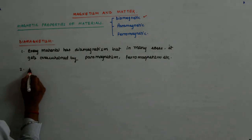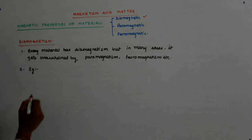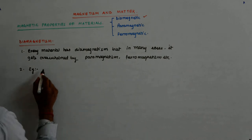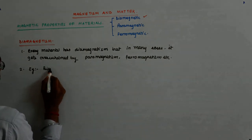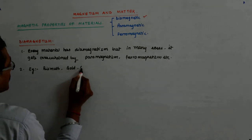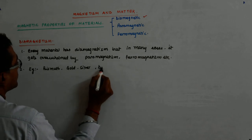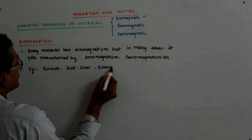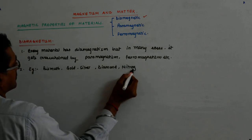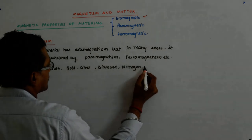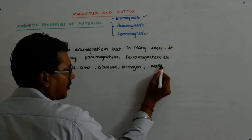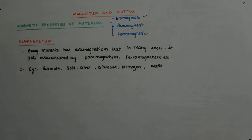Some examples — we have written some. Bismuth, gold, silver, diamond, nitrogen, water — water also is diamagnetic.